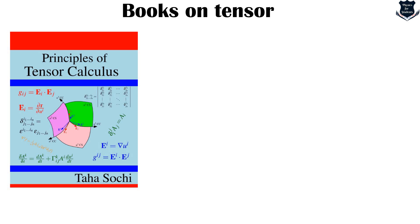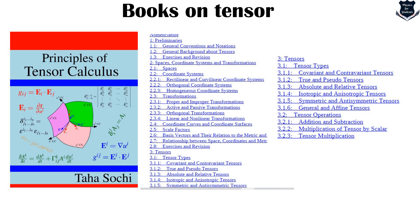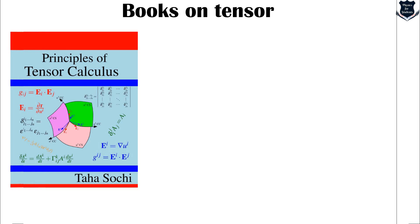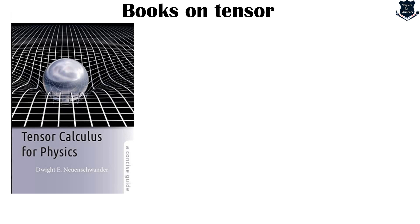The next book is by Taha Sochi — I think this is the second edition. It has been given close to five stars. The book contains a lot of details of tensor calculus: coordinate systems, transformations, tensor types, covariance, contravariance, isotropic tensors, then contraction, inner products, spherical coordinates. Each and every system has been segregated — four special tensors with subsections 4.1, 4.2, 4.3, dot products, and further illustrations. It is a well-arranged book. Taha Sochi's Principles of Tensor Calculus is definitely a very good book.